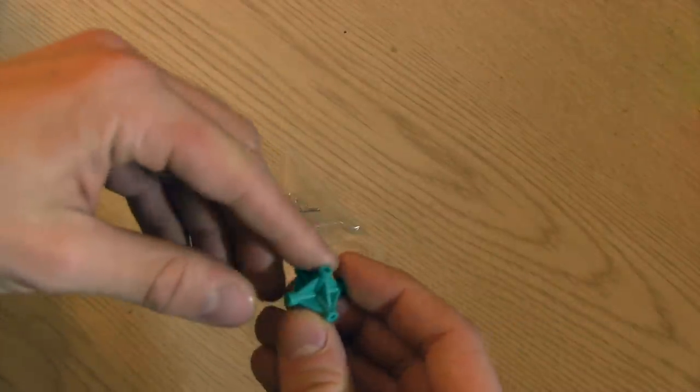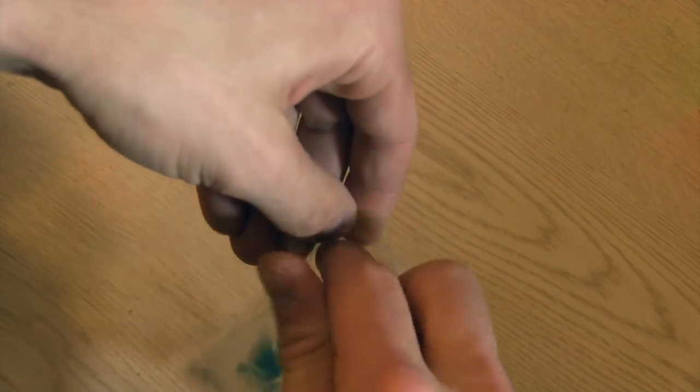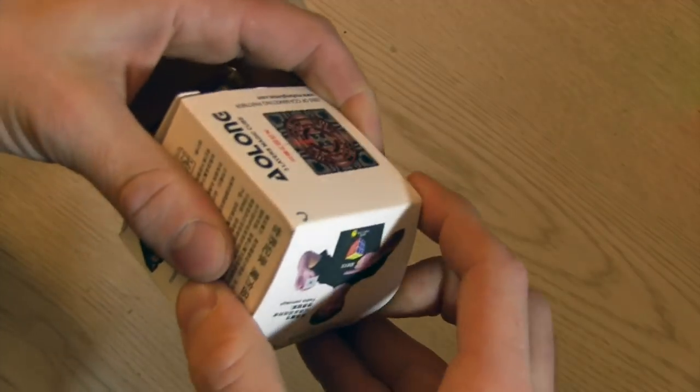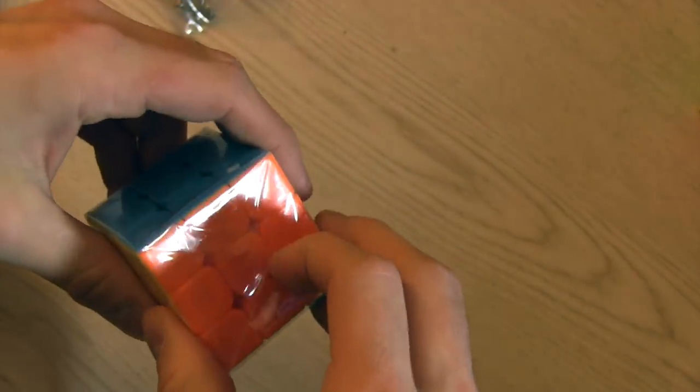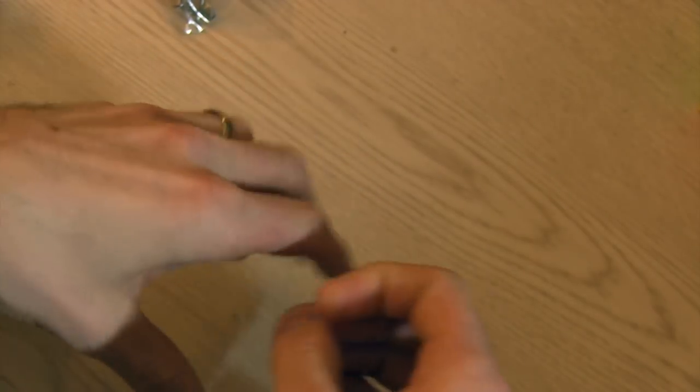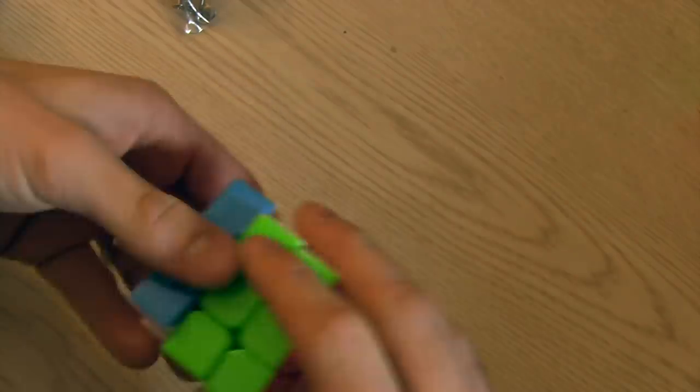So I have the replacement core, but I am going to do a new setup video with the Aolong. Now, this is a stickerless, so I won't have to worry about reapplying stickers. This is also the mini Aolong.